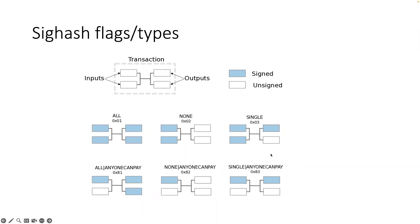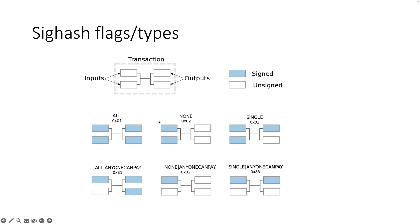Is there a way to do that? Yeah, that's more advanced — I'll cover it at the end. It's closely related to the elliptic curve topics we talked about in the last two sessions. Let's cover the basics first. So we talked about the three output flags. Let's also talk about inputs — there's an additional flag called ANYONE_CAN_PAY. I'll explain why it's called that.